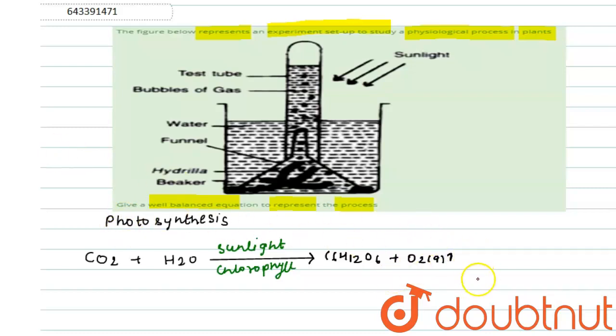In this experiment, we find that these bubbles which emerge are nothing but oxygen. In this question, it shows bubbles of gas. These bubbles are oxygen released from the Hydrilla plant during photosynthesis.